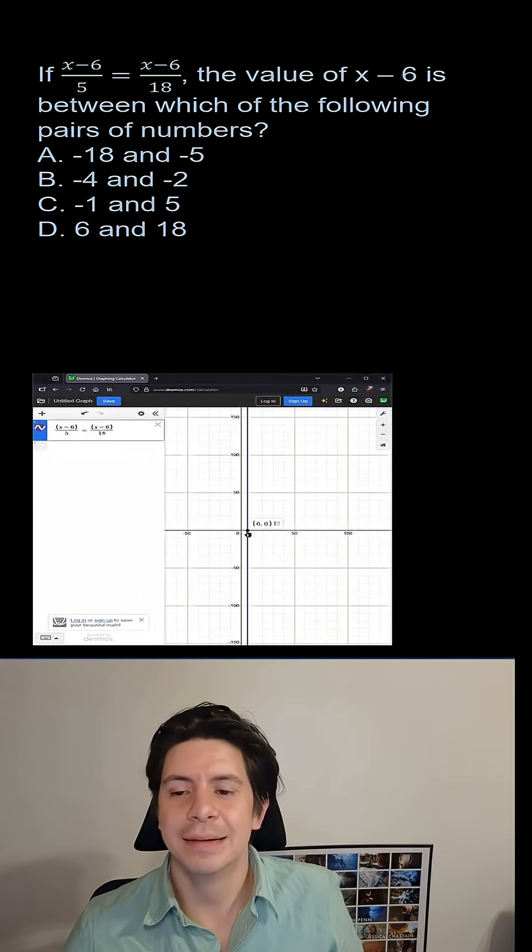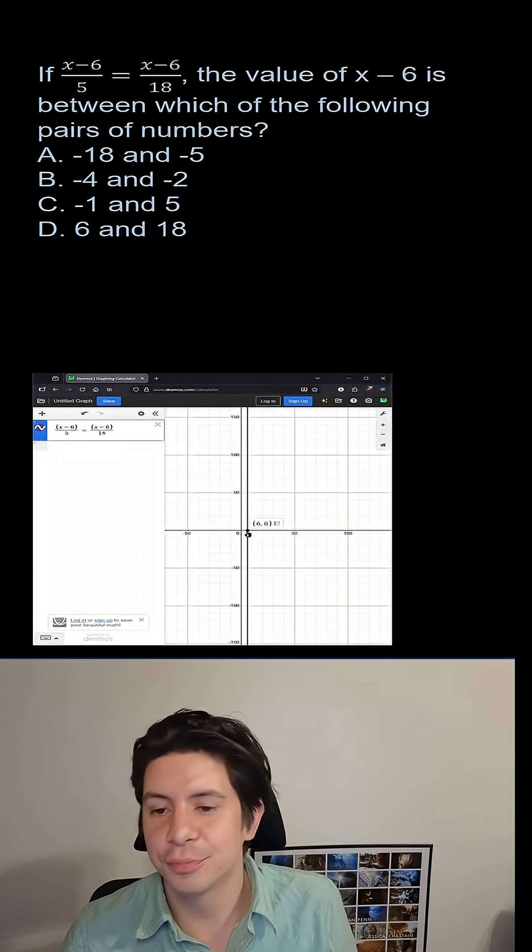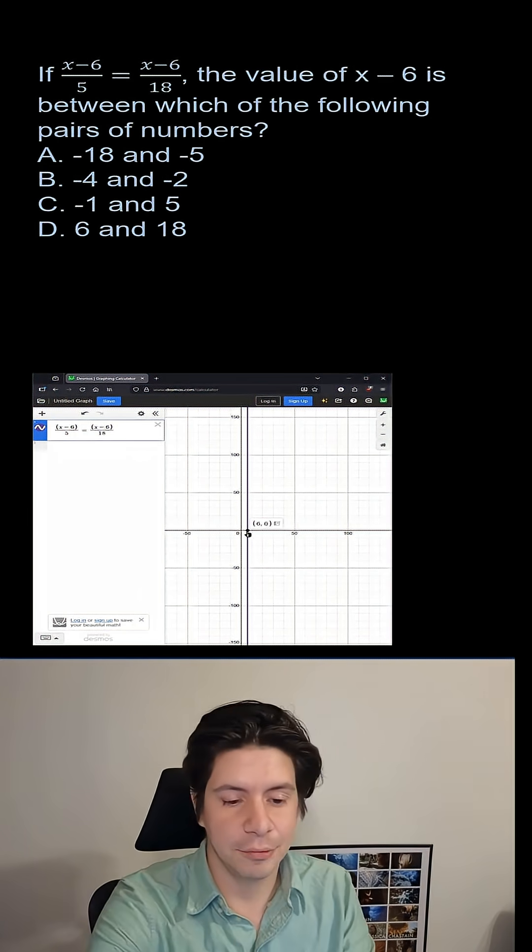And that is right here. x = 6. People get thrown off by putting that as the answer, putting D, but you have to subtract 6 and it will make it C.